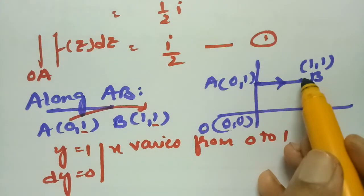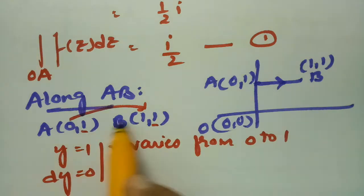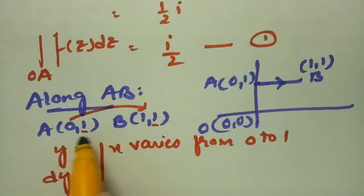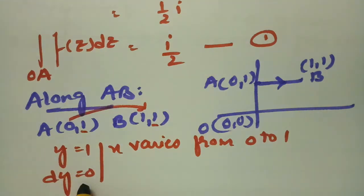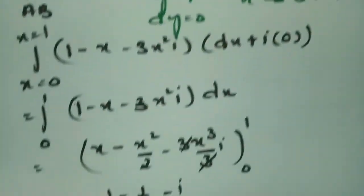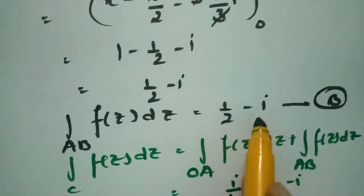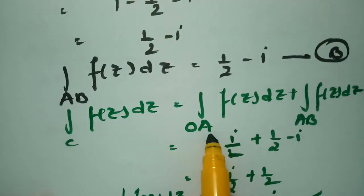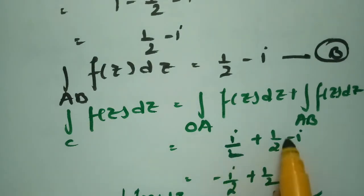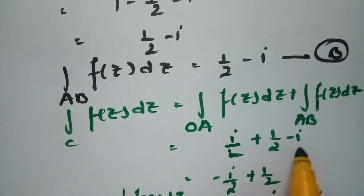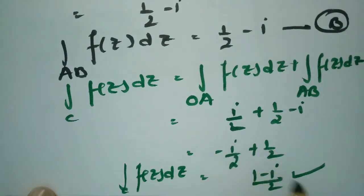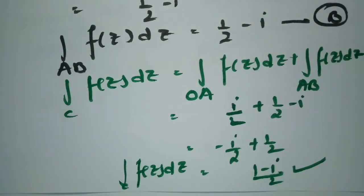Along AB: A is (0,1) and B is (1,1); y=1 is fixed, dy=0, x varies from 0 to 1. Substituting gives the second integral value of 1/2 - i. Adding OA and AB: i/2 + 1/2 - i = (1-i)/2, which is our final answer. I'll be uploading many more problems in this series — please practice and share with your friends. Thank you.